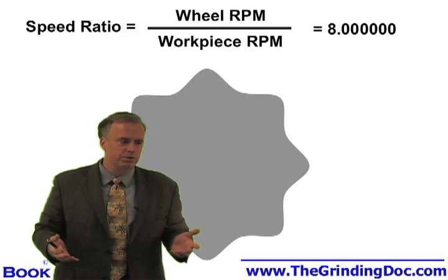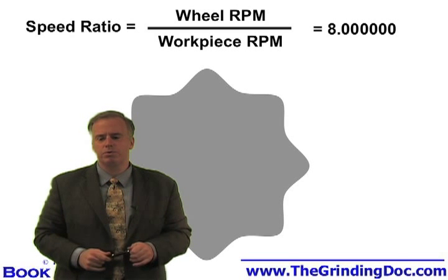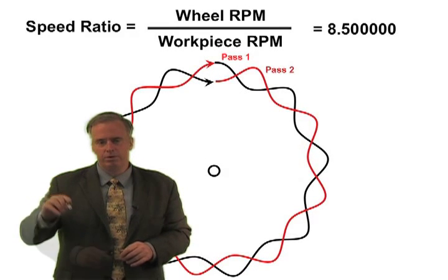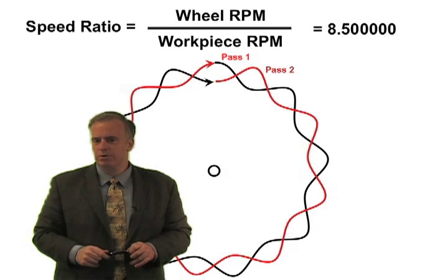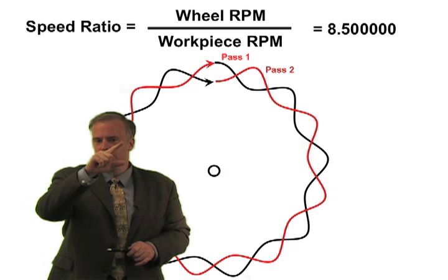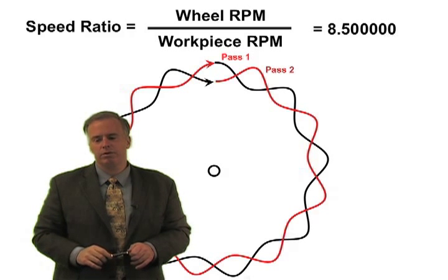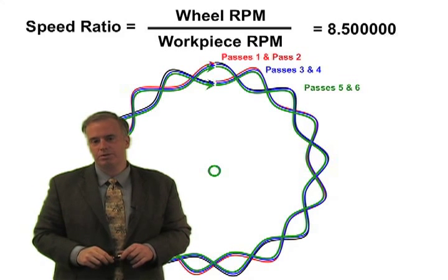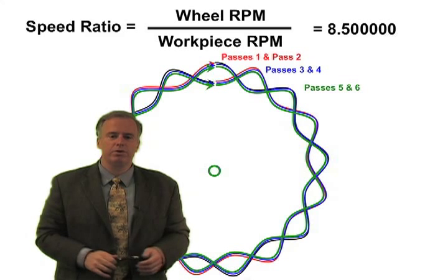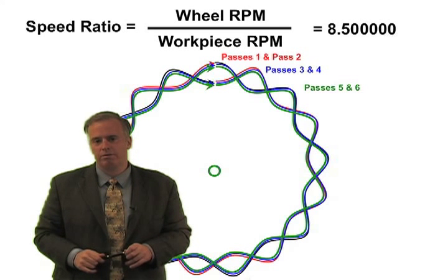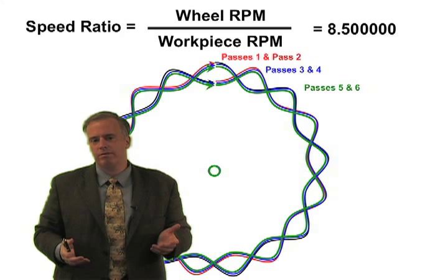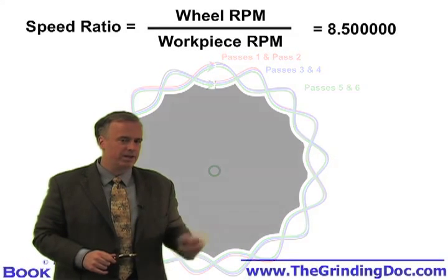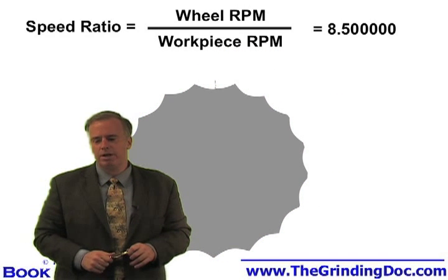One solution is to not choose an integer value — let's choose 8.5. The wheel makes eight revolutions, and with the 0.5 ratio it makes half a revolution extra, then continues during the second revolution. The third revolution picks up where the first left off, and the fourth picks up where the second left off. With the 0.5 value, we get a workpiece that looks a little bit better, but still not good.